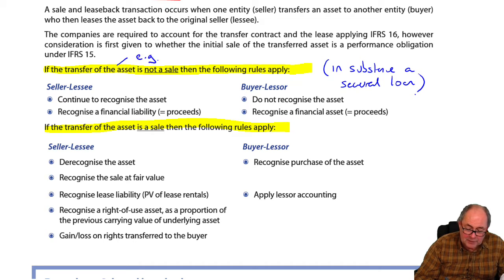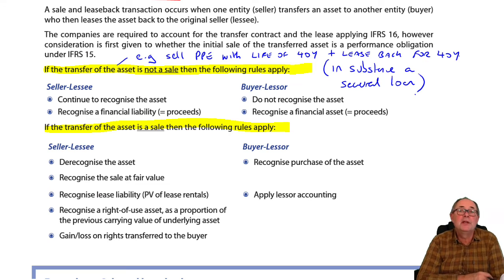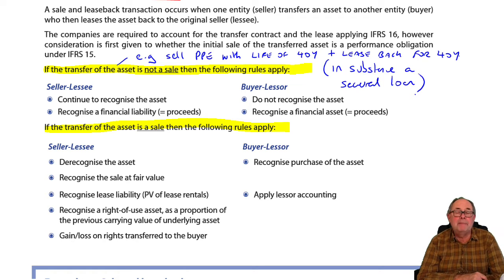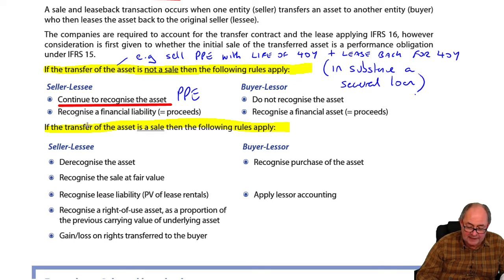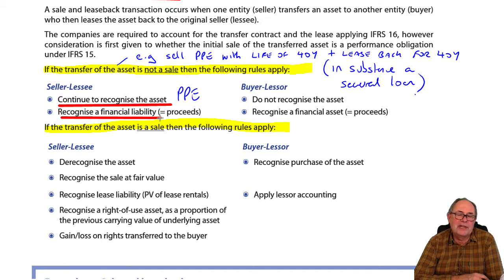An example of this would be to sell PPE with a life of 40 years and to lease it back for the full term of 40 years. In that case, it's a secured loan. I'll continue to recognise the PPE and I will have a large financial liability in my books. I've borrowed some money secured on the stadium, but I retain control of the stadium for the whole of its life.